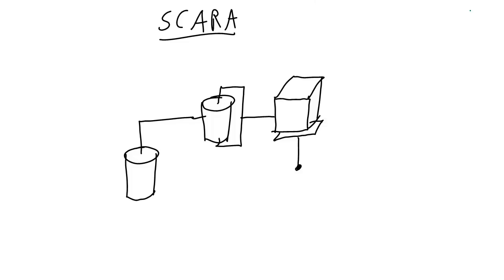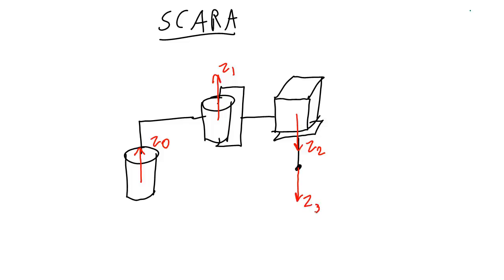So now I'm going to draw the coordinate frames on this. I need to have four frames here because I need one for each joint and one for the end effector. I'll follow the rule that says the z-axis has to be either the axis of rotation for a revolute joint or the direction of motion for a prismatic joint. So z0 has to be either up or down because that's the axis of rotation, z1 also up or down, and z2 up or down for the prismatic joint. The end effector frame copies the frame before it, so z3 will also be down.